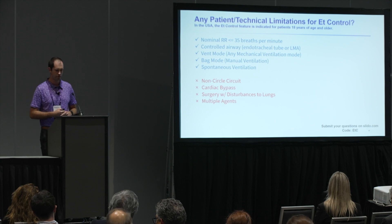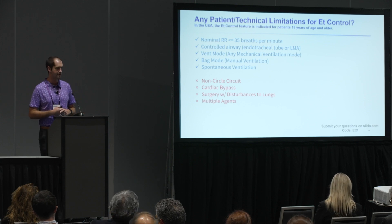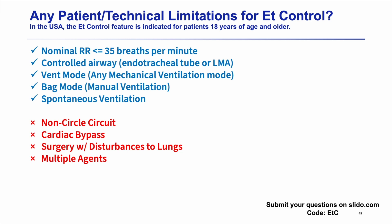What patients can you actually use end-tidal control on? It is indicated for patients 18 years of age or older in the US. You'll need RR less than 35 and a controlled airway. You can use it in any mechanical ventilation mode, in bag mode, or spontaneous ventilation — a pretty wide array of patients. Cases you can't use it on: non-circle circuit, cardiac bypass, surgeries that will have disturbances to the lungs or big leaks in the system — big leaks don't go well with measured end-tidal values. And you cannot use it with multiple agents, just one agent at a time.